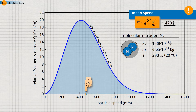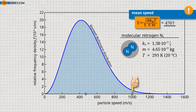Thus, on average, the air particles move at supersonic speed. Due to the statistical distribution of the velocities, however, significantly higher speeds are also present. About 1% of the molecules have a speed of more than 1,000 meters per second. One molecule out of 1 billion even reaches a speed of 2,000 meters per second.